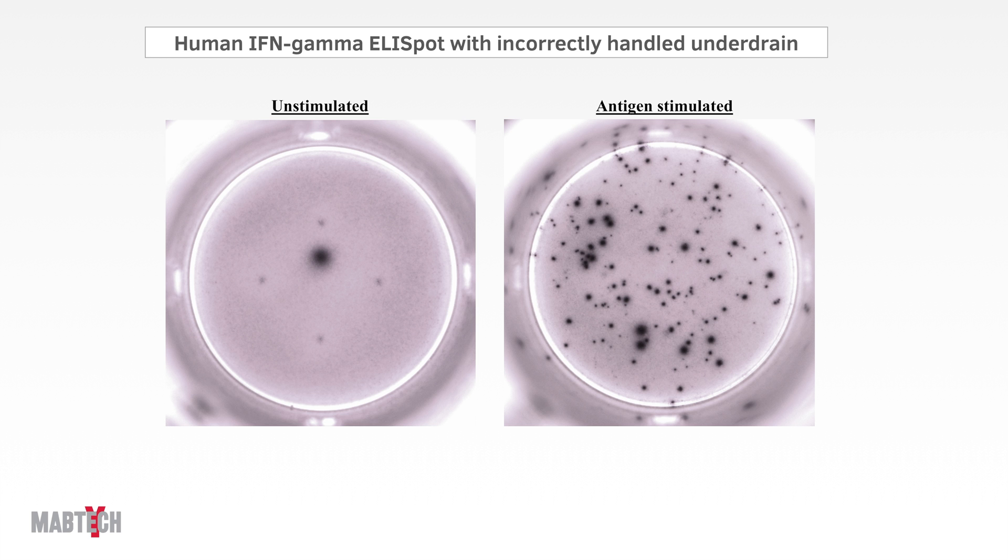In the unstimulated control to the left, the artifacts are very obvious, but you can also make them out in the antigen-stimulated well to the right if you look carefully. These unspecific dots will get counted by most readers at a low setting, and as a result, the user must spend several hours manually deleting them. Very tedious work.